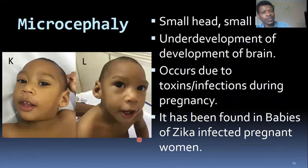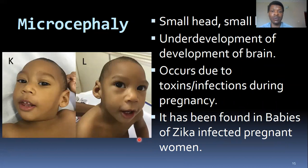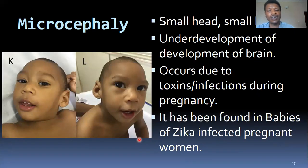Another situation is microcephaly — the baby has a small brain or small head. This is because of poor development or underdevelopment of the brain vesicles during development. We'll look at the three and five brain vesicles in this lecture to understand that. Microcephaly can also be caused by infections, and it has been found in mothers infected with Zika virus — their babies have come down with microcephaly.